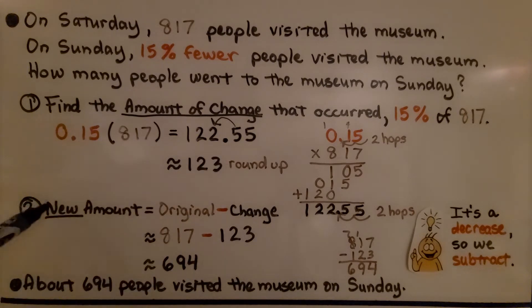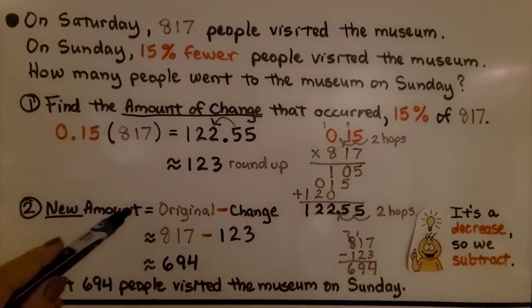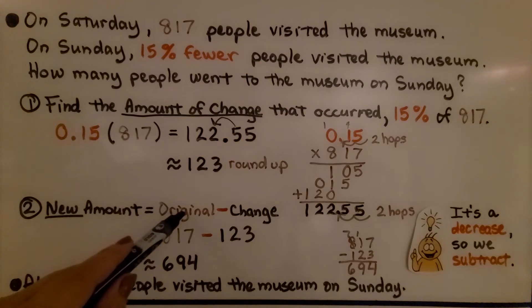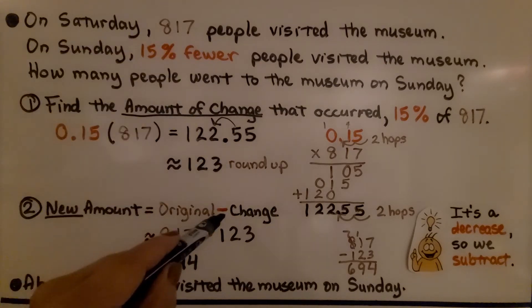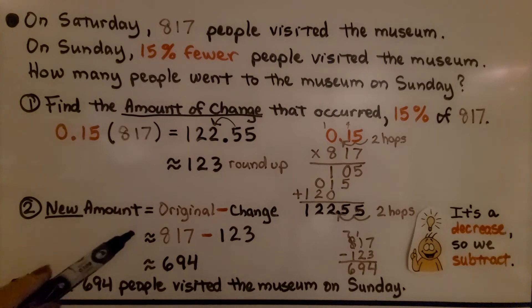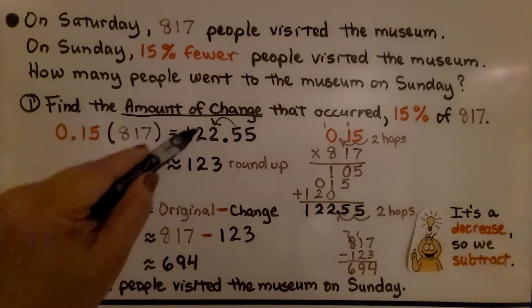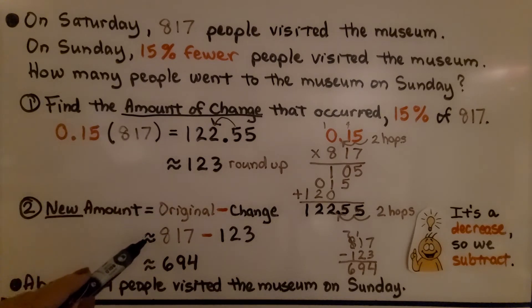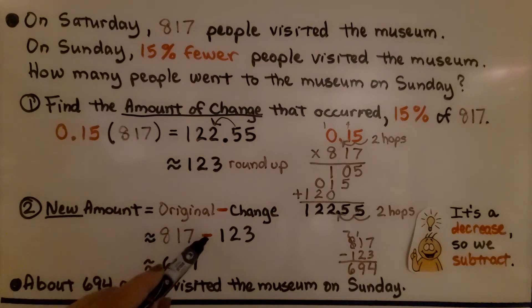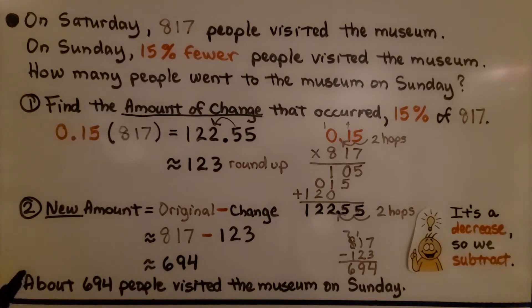Now we do the second step. Our new amount equals the original amount minus, because it's a decrease, the change. We have approximately 817 minus 123, which gives us approximately 694. So about 694 people visited the museum on Sunday. It's a decrease, so we subtract it.